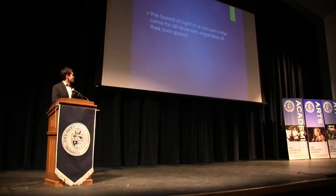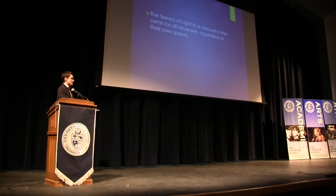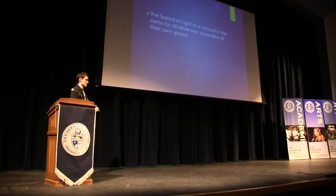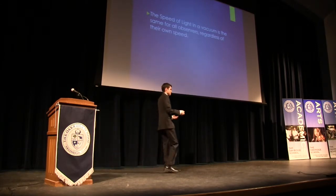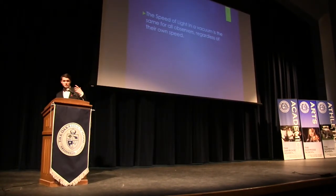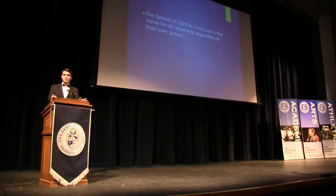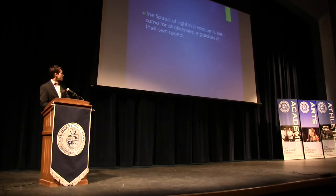The speed of light in a vacuum is the same for all observers regardless of their speed. Basically, if I shine this laser at that wall, every photon leaving this laser is traveling at exactly the speed of light. If I walk across the stage, if I walk backwards, if I spin around in a circle, it's always traveling the exact same speed. And that seems kind of simple right now, but it does cause some serious problems later on.